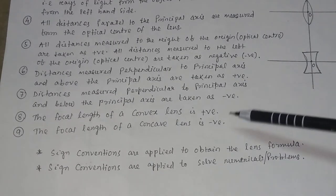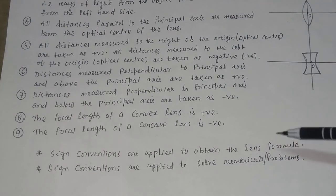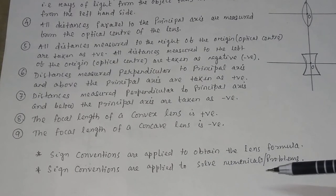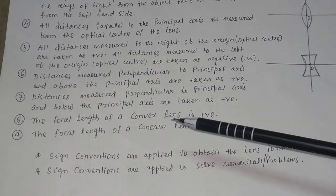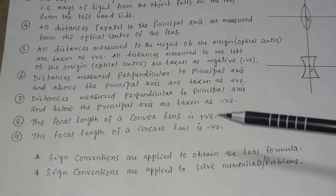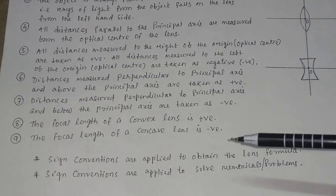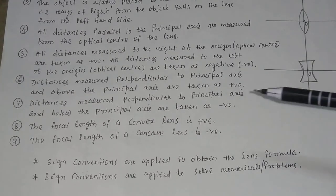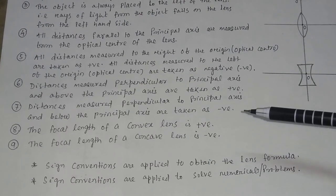This is very important while doing problems. Sign conventions are applied to obtain the lens formula and to solve numerical problems. The focal length of a convex lens should be taken as positive, and the focal length of a concave lens should be taken as negative. In the next video, we will discuss about the lens formula.